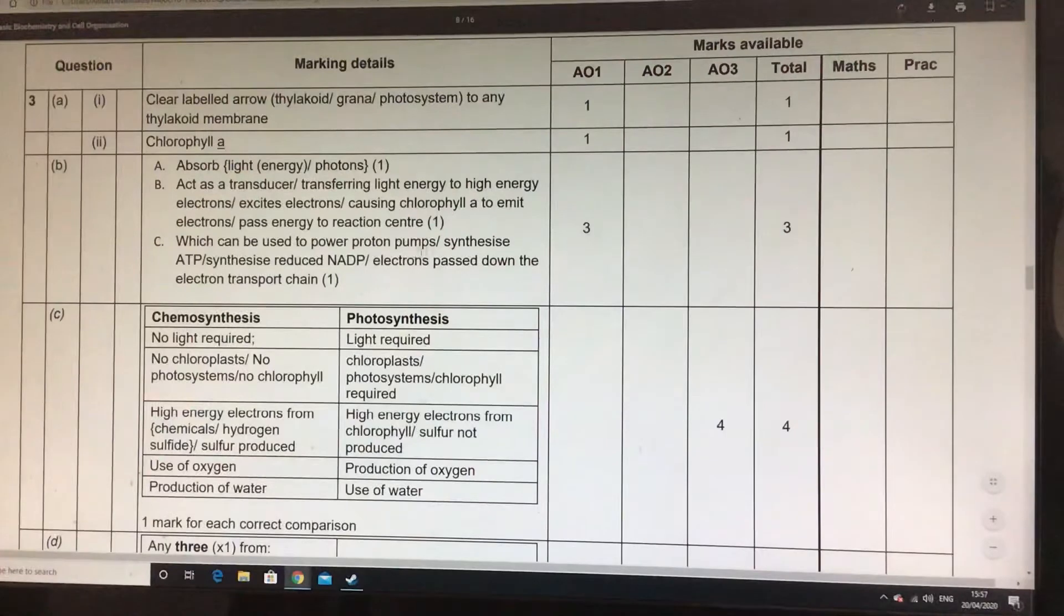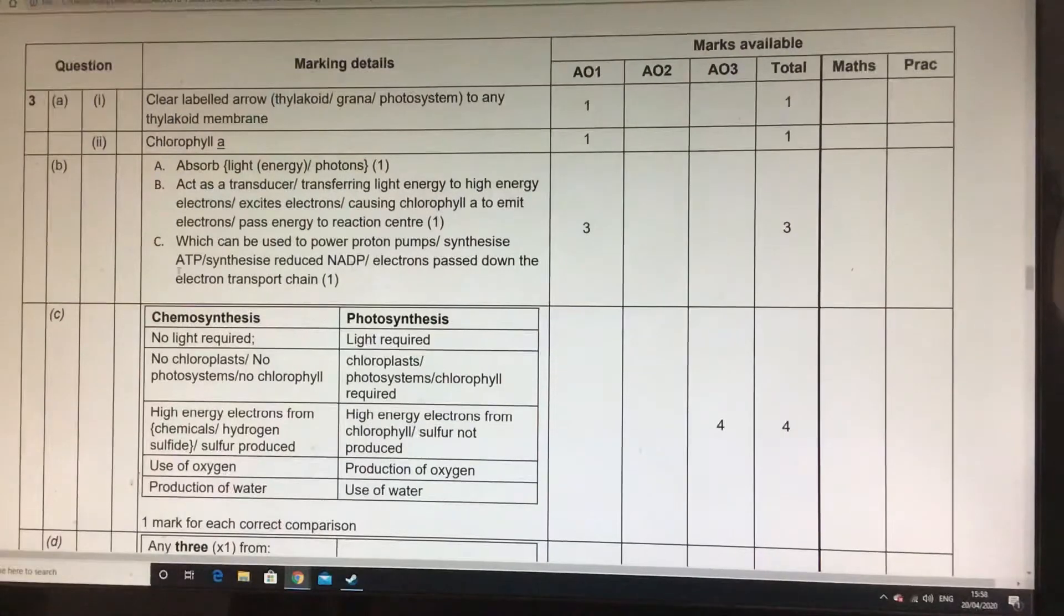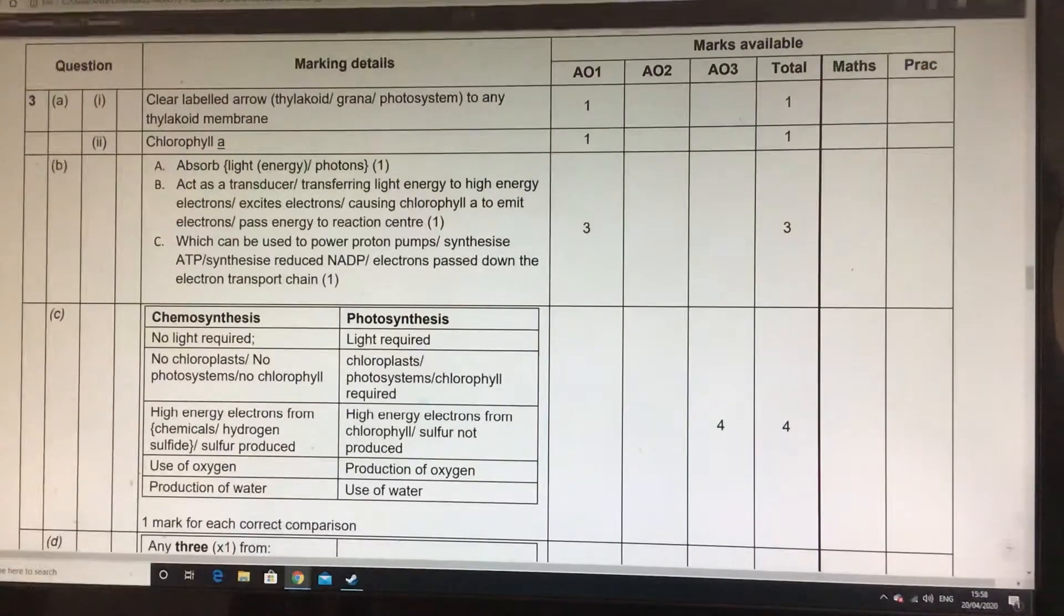it's powering those pumps. It is allowing the chemiosmotic gradient to be built up again. And again, we've got the synthesis of ATP and the reduced NADP, or if you call it NADPH as well, that's fine. Or simply electrons are passed down the electron transport chain. Tough question, but this is part of it.